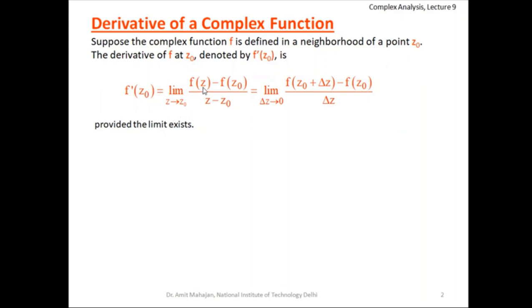the function f(z) minus f(z₀) divided by z minus z₀, when z approaches z₀. So z₀ is the fixed point and z is an arbitrary point in the neighborhood. When the neighborhood point approaches this fixed point, if this limit exists, then we say that the derivative exists.